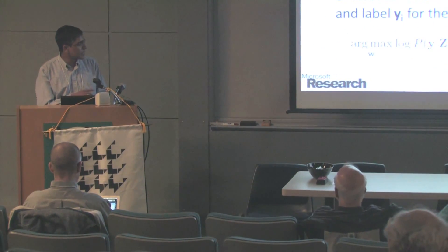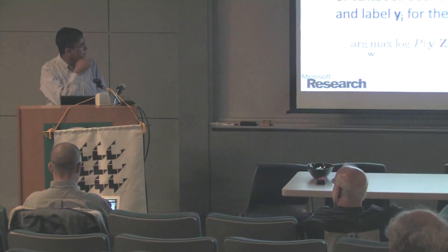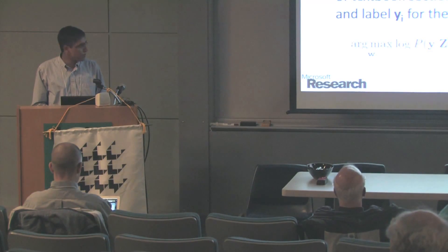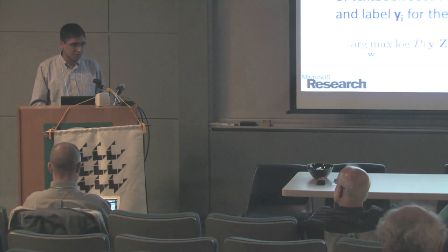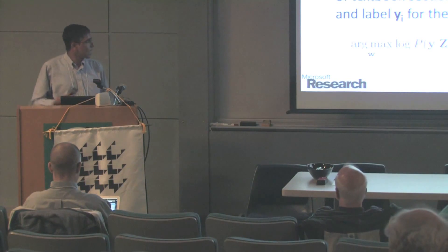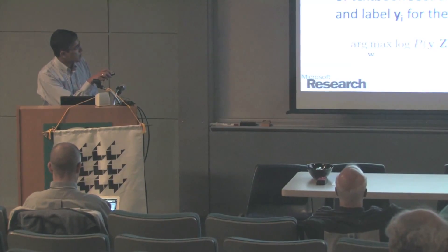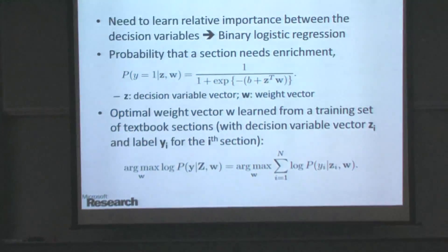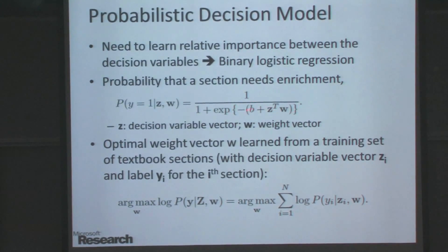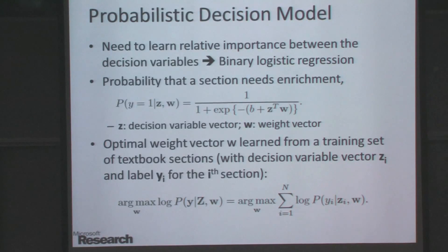What is b? b is the intercept. Is this a standard formula? Yes, it is called logistic regression, used in many machine learning contexts — like using a decision tree, it's another way to combine numeric variables. y denotes the probability that a section needs enrichment. In our case, z is just three variables: dispersion, and two variables for syntactic complexity.